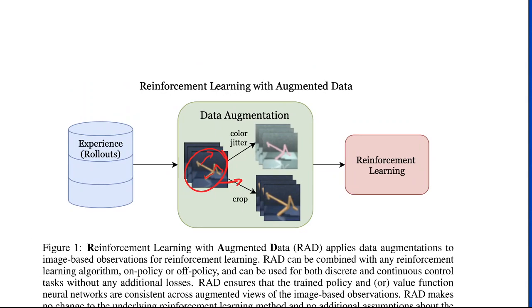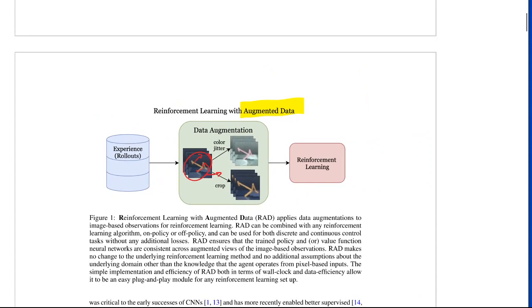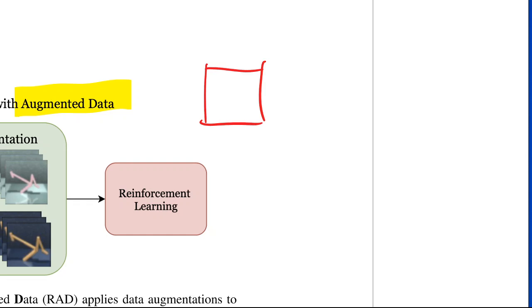The second part is data augmentation. Data augmentation is a pretty standard practice in supervised learning. If you have a supervised learning task, for example, an image classification task, here is a picture of a cat and the label is cat, then you can feed this through your neural network to arrive at a loss.